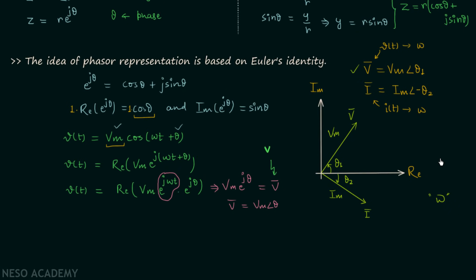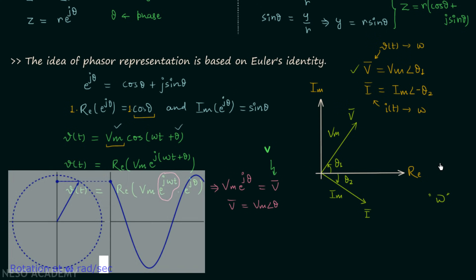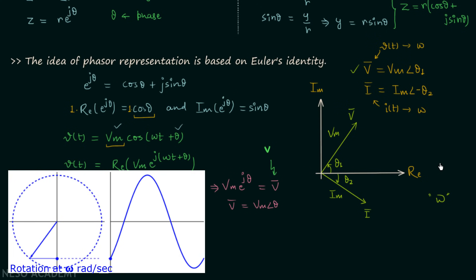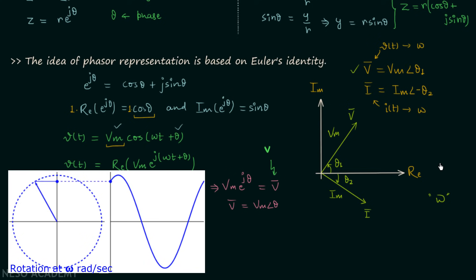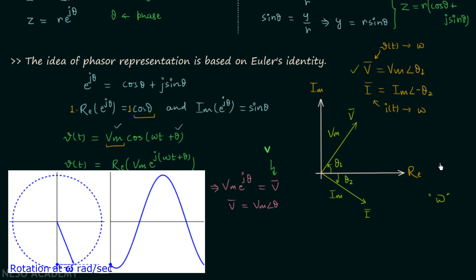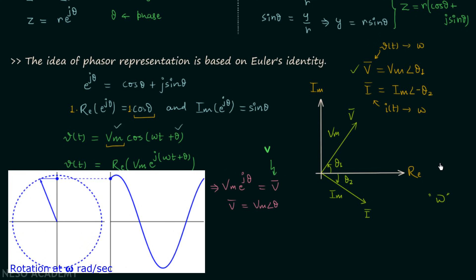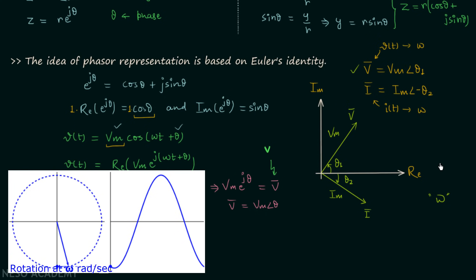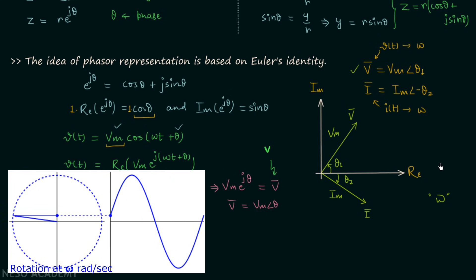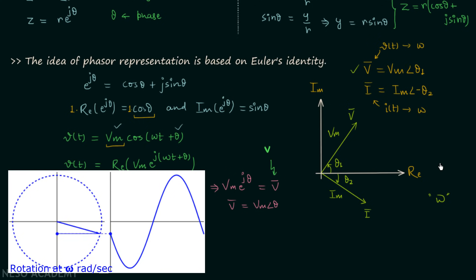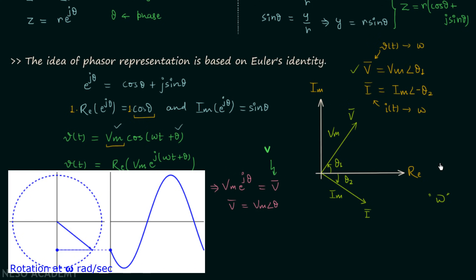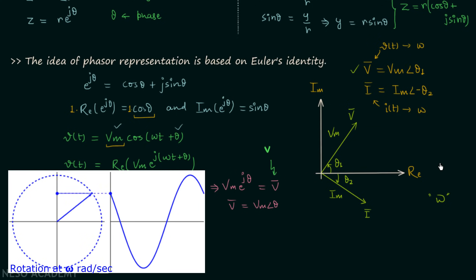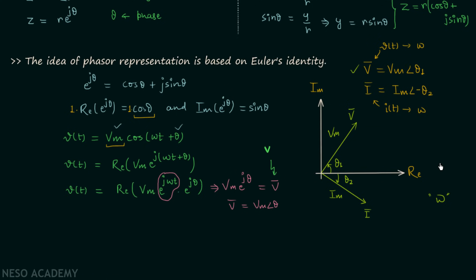An animation shows the vector rotating at angular frequency Ω, with corresponding points on the circle generating the sinusoidal waveform. You can easily imagine that if you increase or decrease the angular frequency, the sinusoid will change. In the coming lecture we will solve some questions related to phasors.